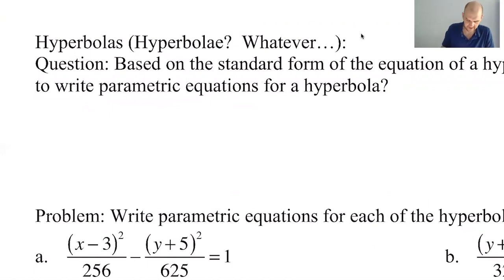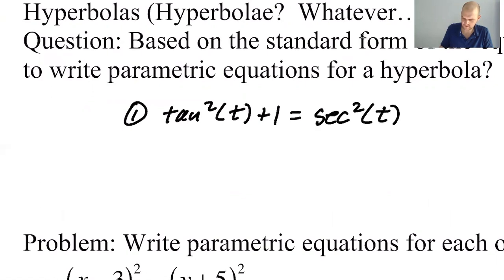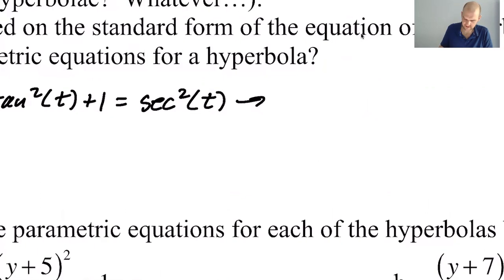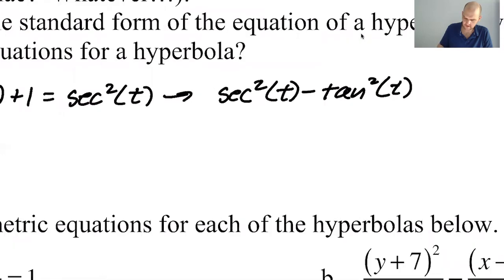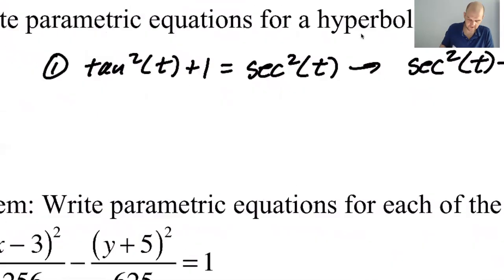We're either going to be using secant squared minus 10. Well, let's write it the way we have it memorized. So we have it memorized as tan squared plus 1 equals secant squared, which means that secant squared minus tan squared equals 1. Or we could use the other one.